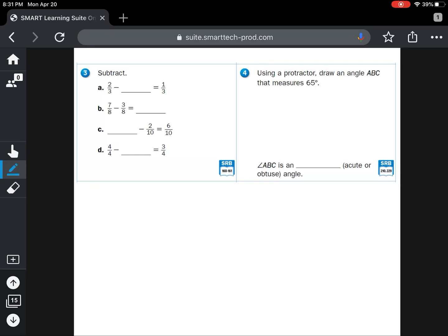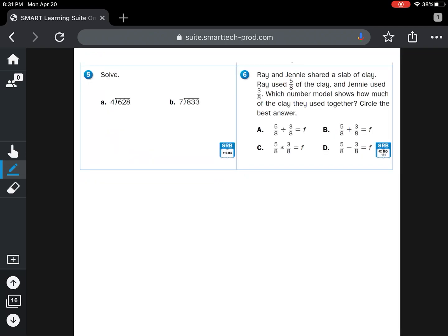For number four, it says you need to use a protractor. And since most of us don't have those at home, we're going to X out number four. So we'll do number one, number two, number three, skip number four.